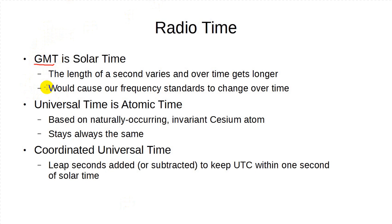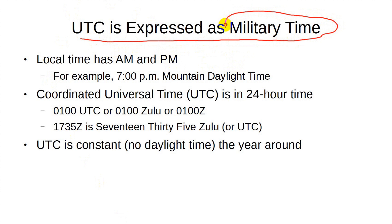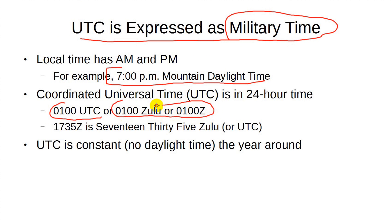UTC is slightly different from GMT, given one is atomic time and the other is solar time. But often we hams, who don't keep time down to the microsecond, sometimes call time UTC and sometimes GMT. It's normal that UTC be expressed using a 24-hour clock. So instead of saying 7 o'clock PM Mountain Daylight Time, I would say 0100 UTC, often abbreviated as 0100Z. 1735Z would be 1735 Zulu.